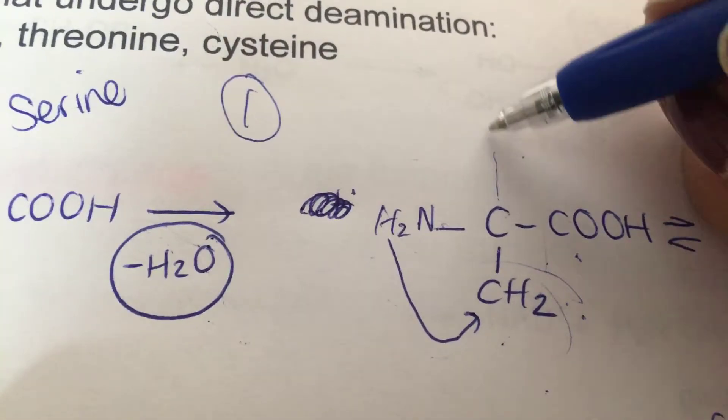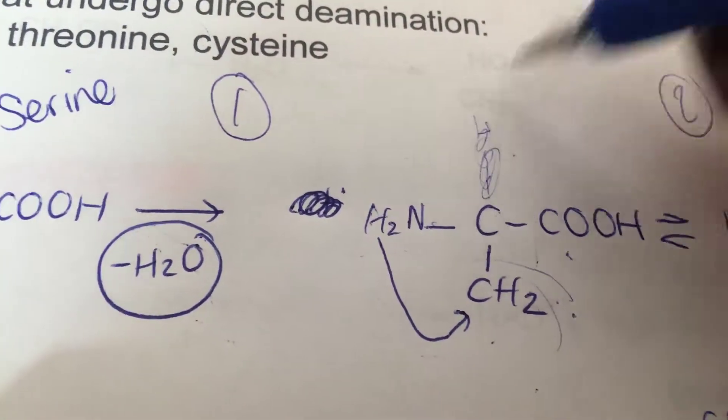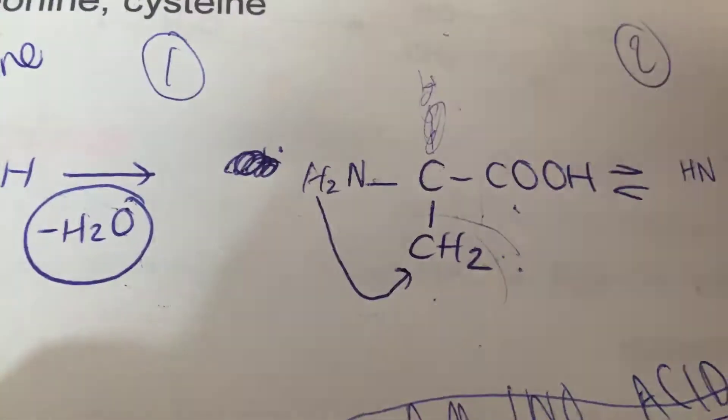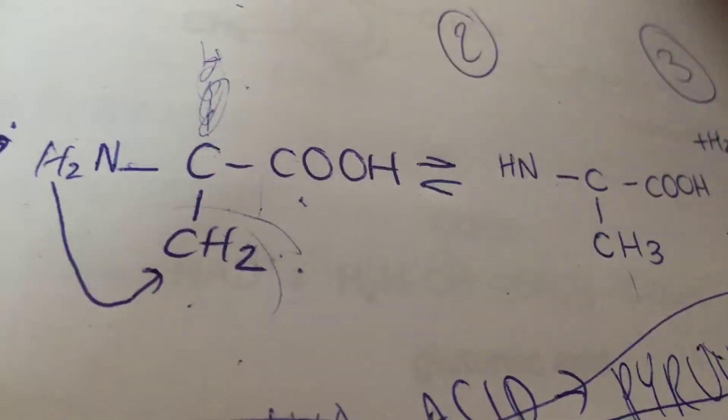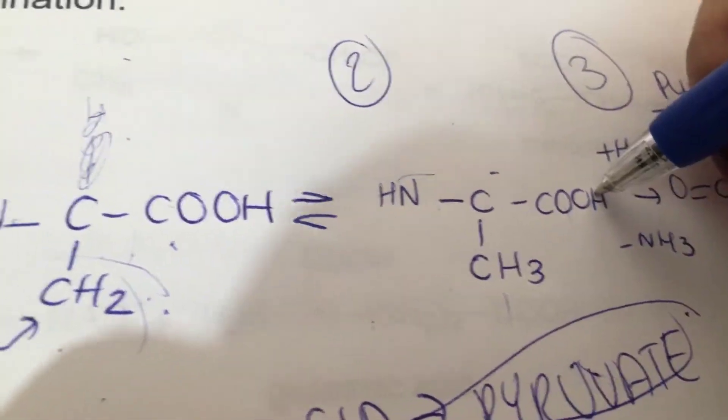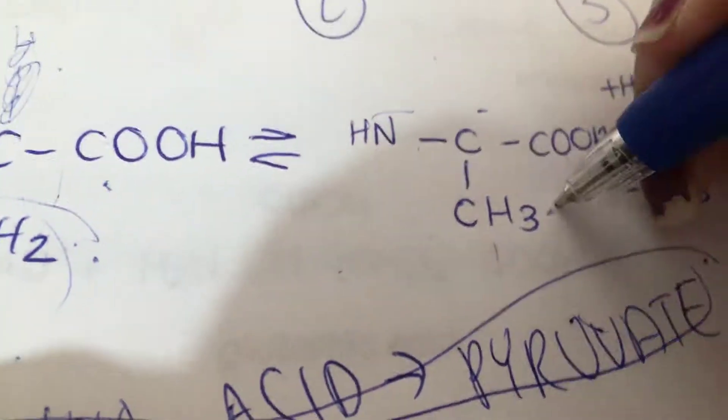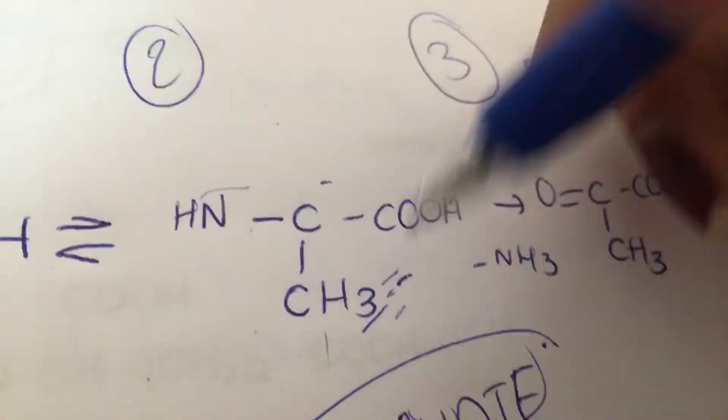Now the NH2 is going to donate a hydrogen and it's going to go down here. So you're left with HN, you're left with C, you're left with COOH, and here you have CH3.